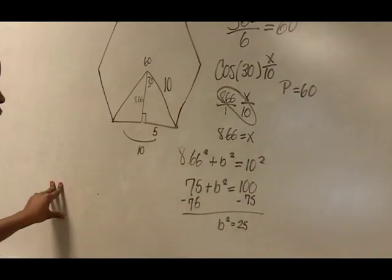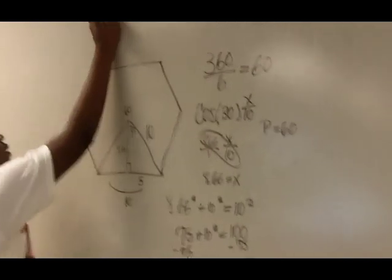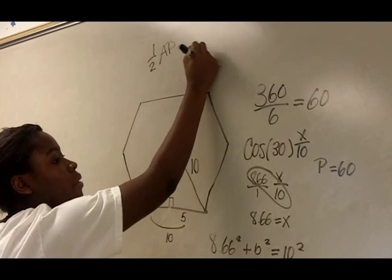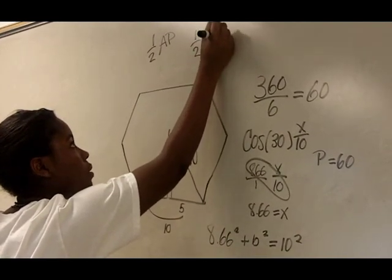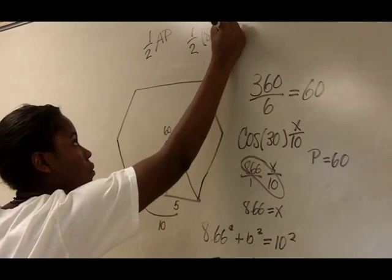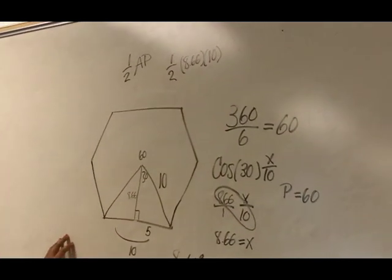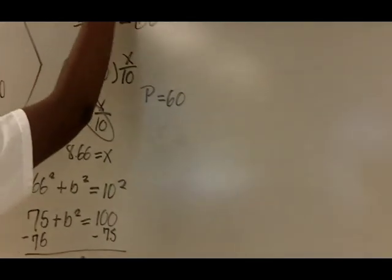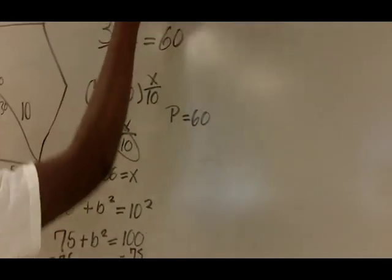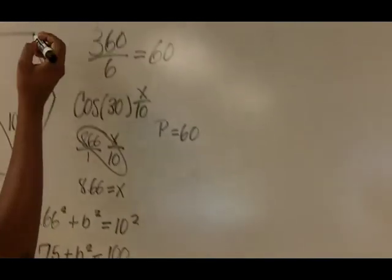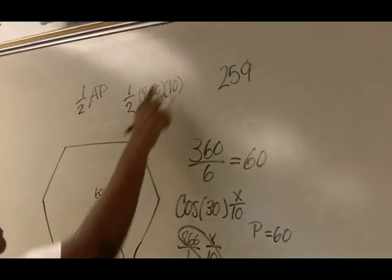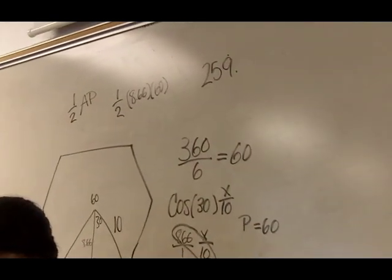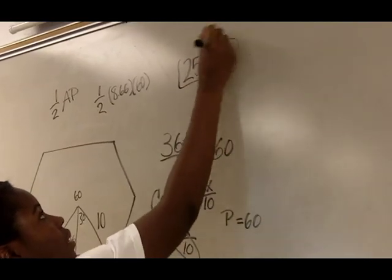So to find the area, 1/2 times 8.66 times 60, and that is going to equal 259. Oh yeah, 60, and that's going to equal 259.8, and that's the area.